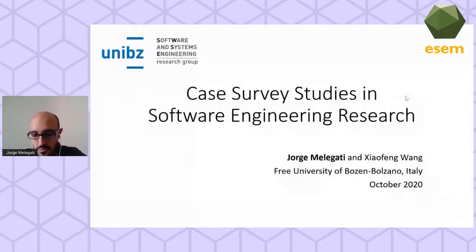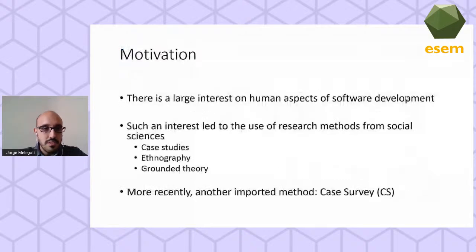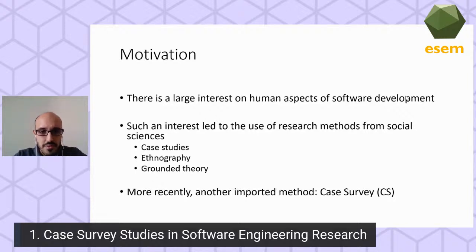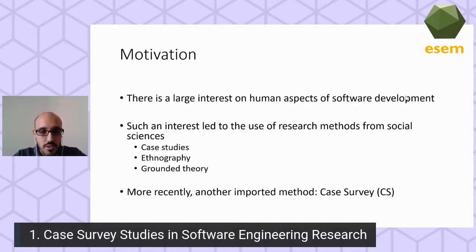I'll start with our motivation. In the last two decades, there has been a large interest in human aspects of software development. We stopped focusing only on technical aspects like programming, coding, and architecture, and moved also to organizational and cognitive aspects. This interest led to the use of several research methods from social sciences, like case studies, ethnographies, and grounded theory.